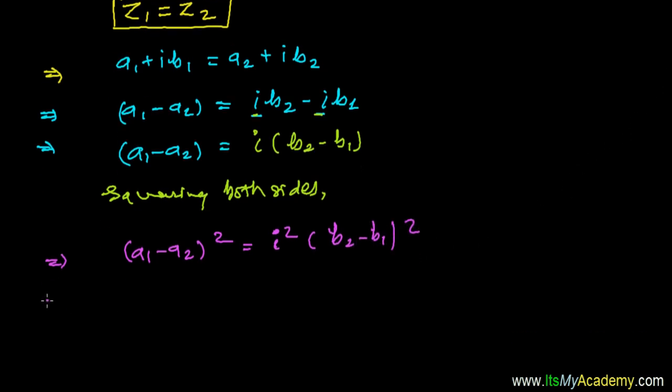Further, if you look, it is now (a1 minus a2) all square, and i square, that's minus one, because we know i square equals to minus one, and then it's (b2 minus b1) all square. Further, (a1 minus a2) all square.